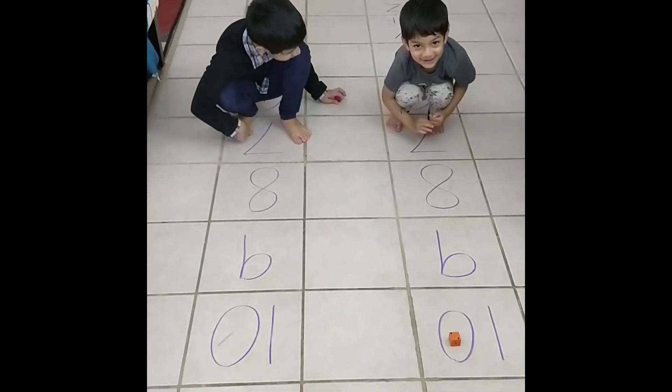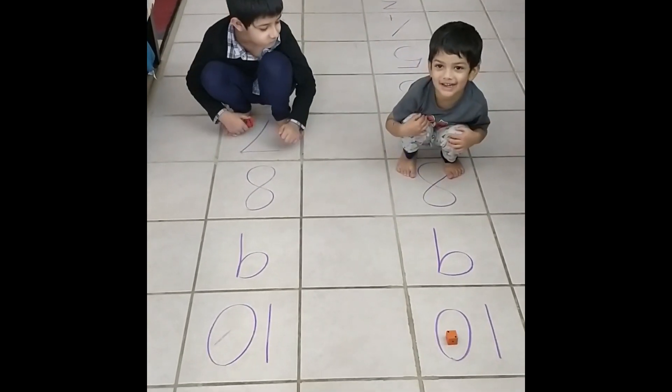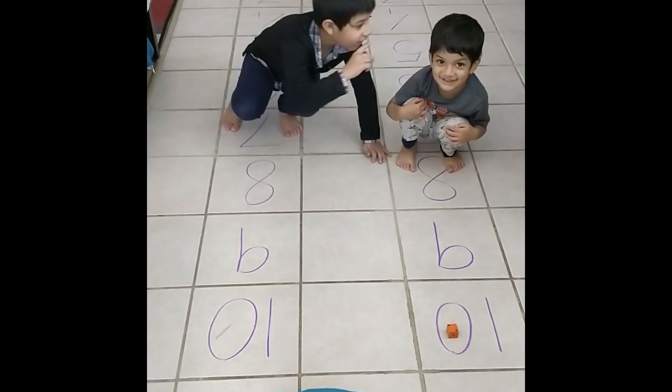You can also play this game on a number path that you make on the floor, or that you draw outside in chalk and kids become the frogs hopping along.